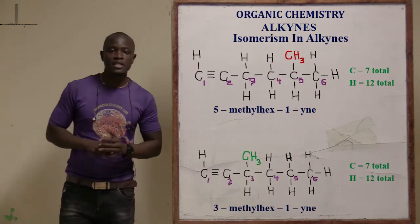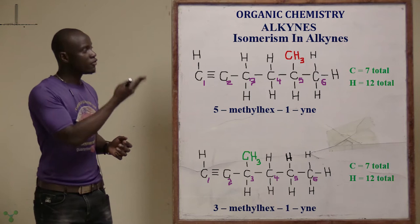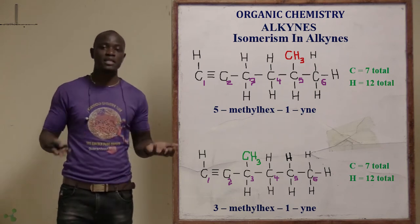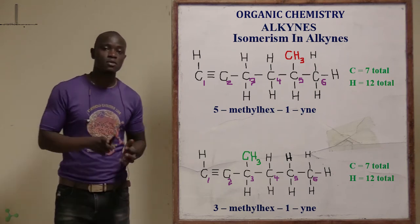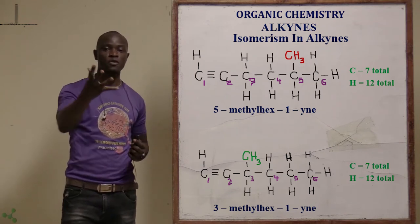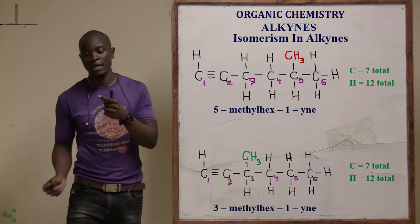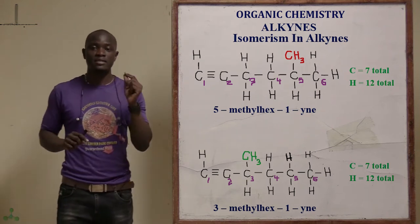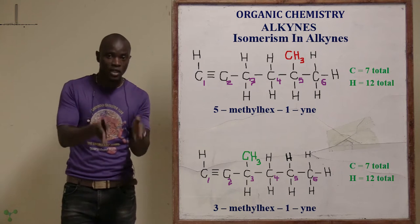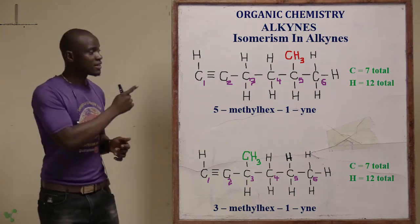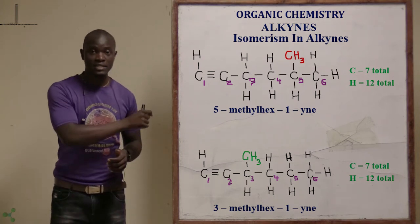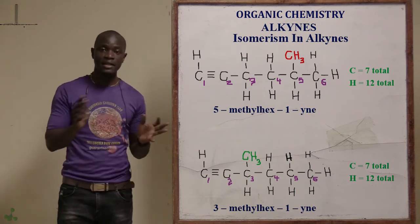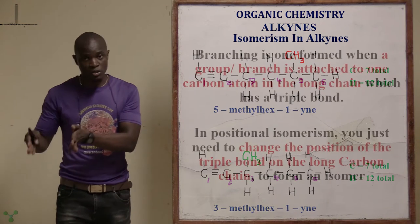For example, this structure is hexyne. If you remove that branch and place it at the third carbon atom, it becomes a branching isomer. You extract a functional group from the parent branch, place it in another position, and it forms a branching isomer. Remember, isomers are compounds which have the same molecular formula but different structural formula. For hexyne, the number of carbon atoms and hydrogen atoms is exactly the same — the molecular formula is the same, but the structural formula is different.